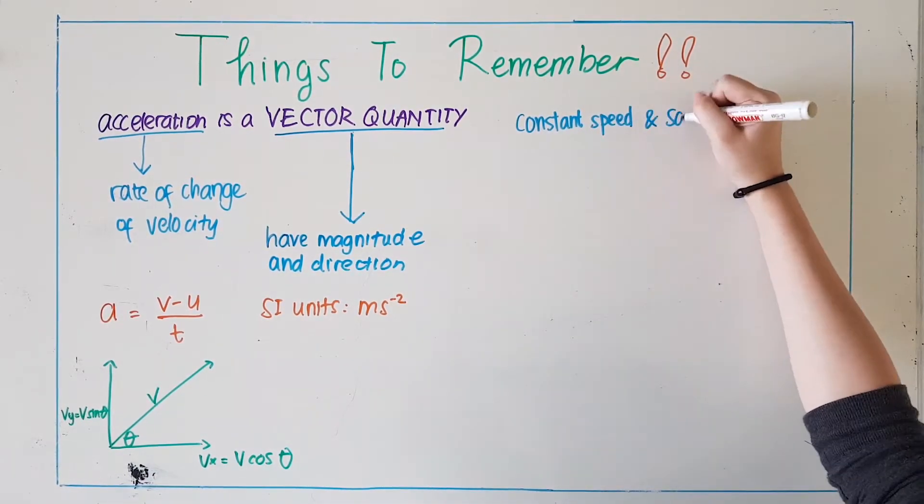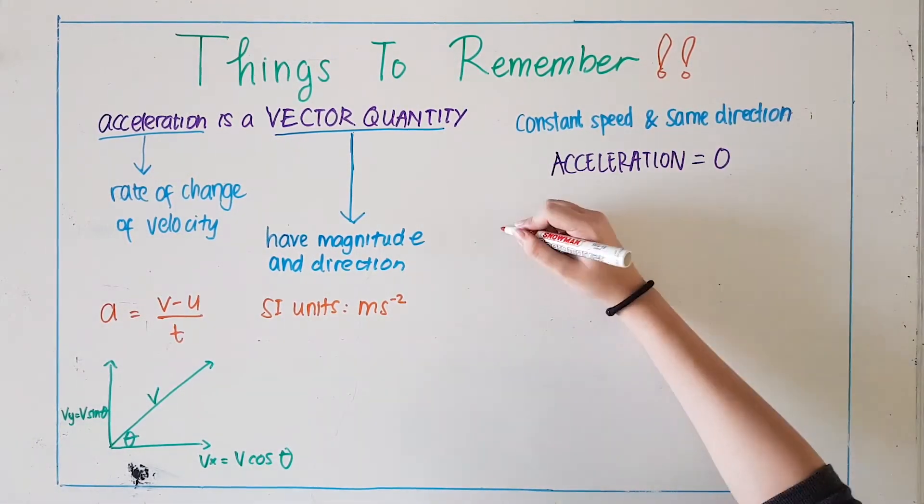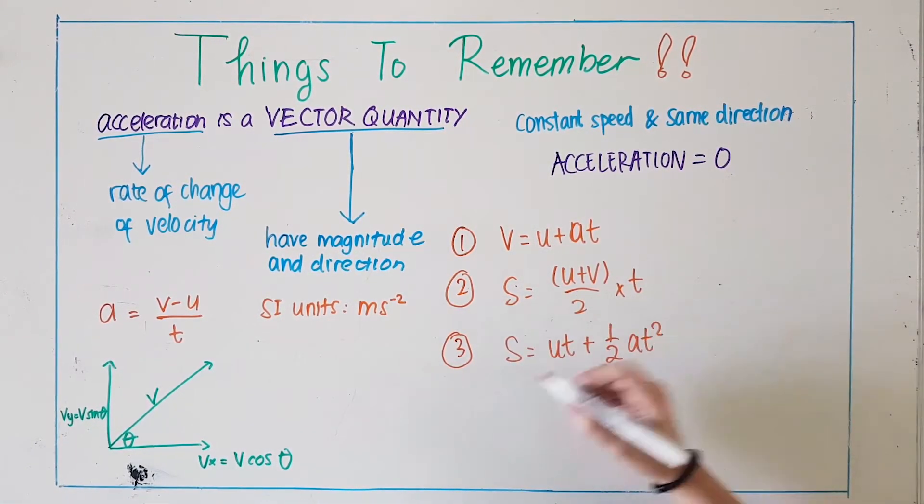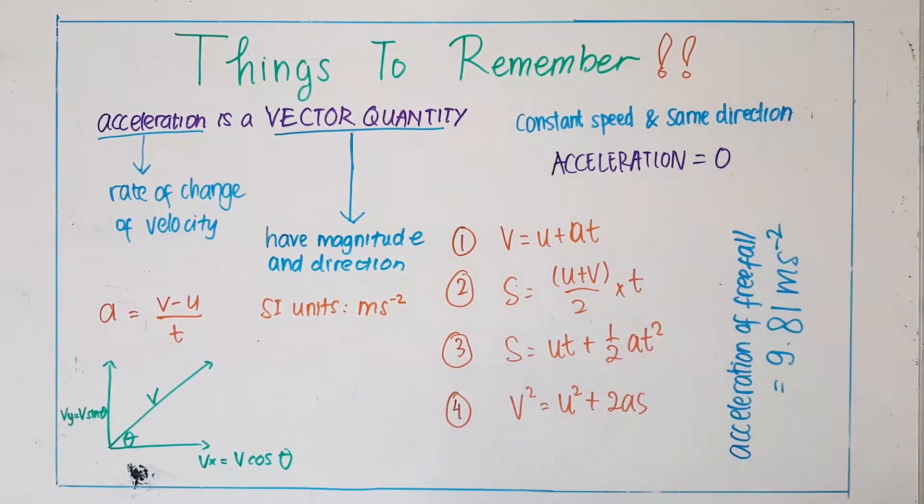When an object has constant speed and same direction, the acceleration is always going to be 0, and always remember the four equations of motion. And of course, the acceleration of gravity, or freefall, is 9.81 meters per second square.